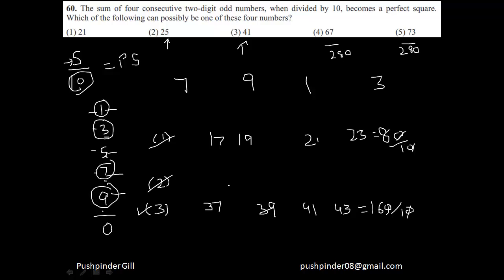You can see what logic is being used in this question. If you start using algebra, you'll end up with complex equations, and that's why CAT is termed to be difficult. But it's not difficult — you have to follow the logical approach. Even when using the options, you should first narrow things down so that using the options becomes more efficient. I hope you understood this; don't forget to send me your feedback. Thank you very much, and see you in the next video.